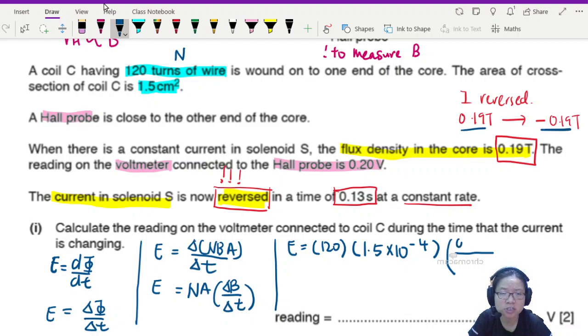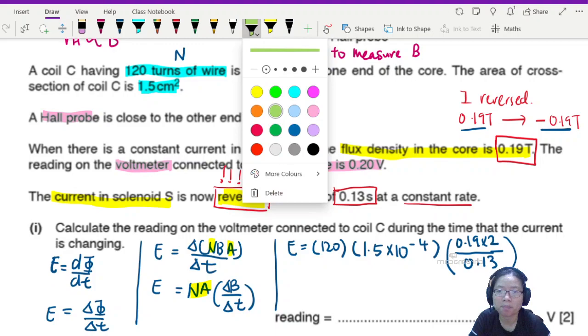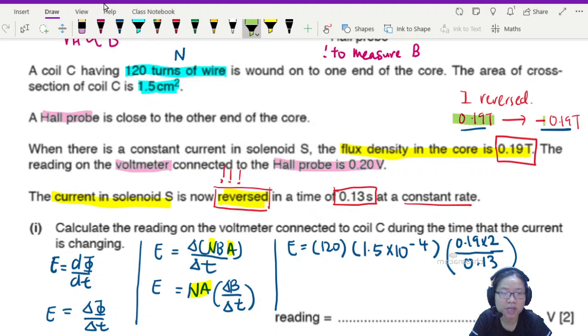So from here, I have the number of turns 120. I have the area 1.5 centimeter square converted to meter square. So 1.5 times 10 to the power of negative 4. The change in magnetic flux density was 0.19 to negative 0.19. My good friends, can I just put 0.19 times 2? Because you go from 0.19 to 0 to negative 0.19, the total change will be 2. So divided by how long did it take for it to reverse? 0.13.